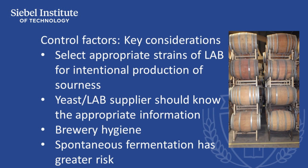One type of brewing that lacks control over potential biogenic amine production is the practice of wild or spontaneous fermentation, which involves using airborne yeast and bacteria to settle into cooled wort and carry out the required fermentation. Breweries conducting spontaneous fermentation should be aware of the risks of extensive biogenic amine production in their finished beer, and appropriate techniques should be applied to limit biogenic amine formation from the standpoint of both off-flavor production and human health concerns.